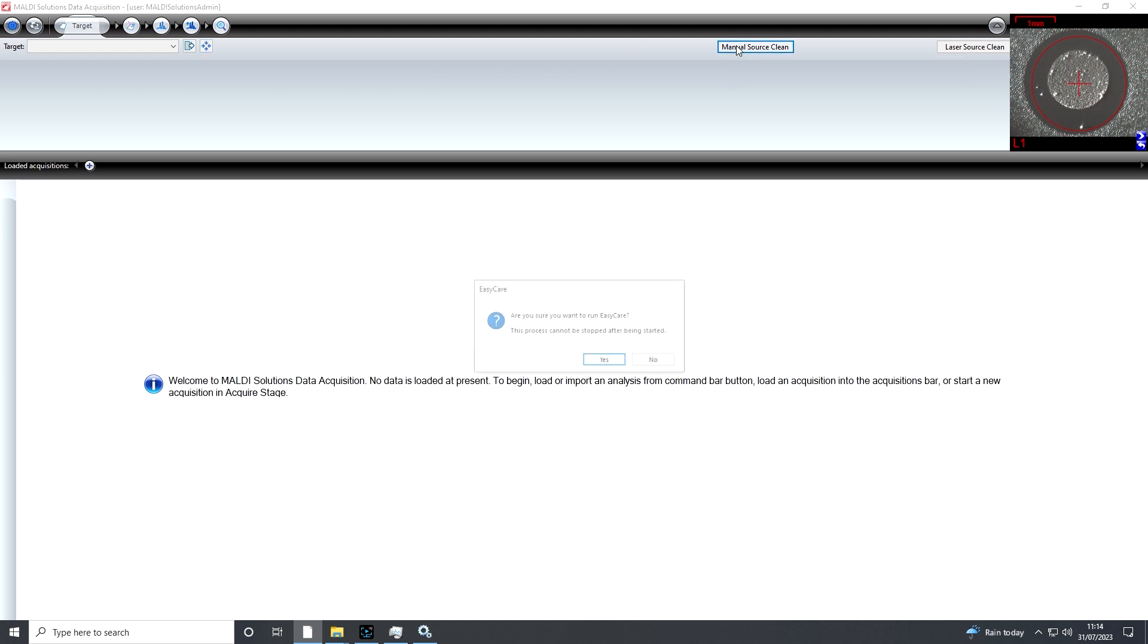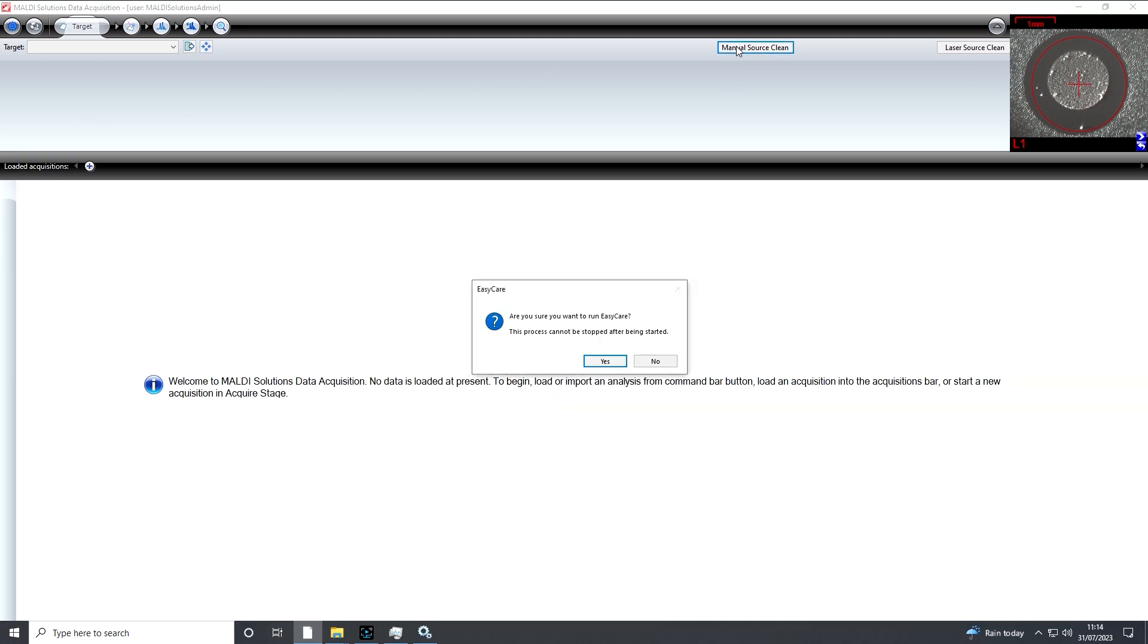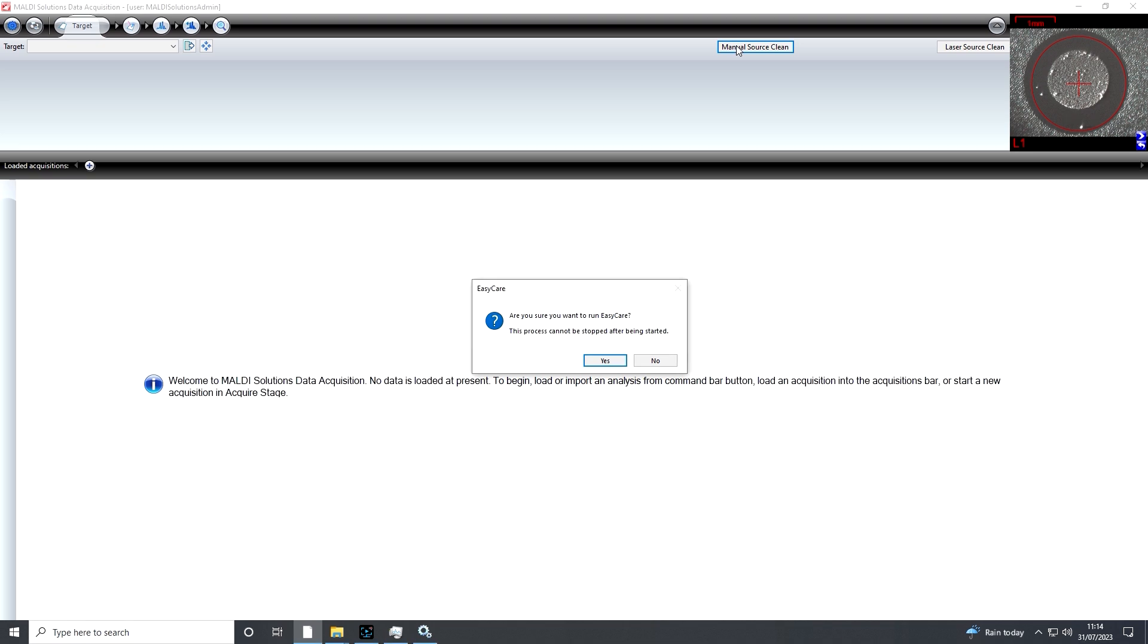Click the Manual Source Clean button and a prompt will appear. Once started, it is not possible to cancel the Manual Source Clean wizard. Do not run the wizard unless you intend to complete the entire process. The Manual Source Clean process takes between two and two and a half hours. Click Yes to start the Manual Source Clean wizard.